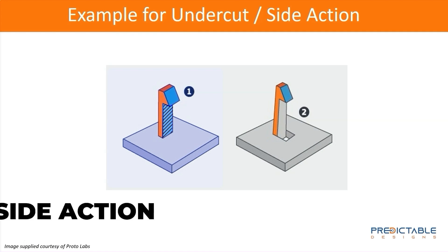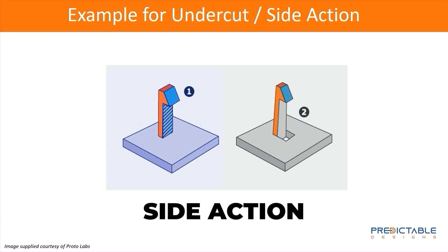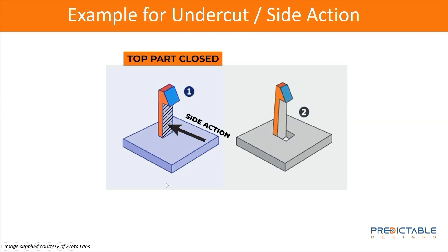One solution to this is what's called a side action. Instead of just having the simple mold where you have the top piece going this way and the bottom piece going this way, side actions are pieces that come in from the sides of the mold. You've got the top part closed, the bottom part closes, and then you've got a side part that comes in. That's what fills in this gap. Then you inject the plastic, and before you can open the mold to remove the part, you have to first remove the side action that pulls out from the side before the part can be released.